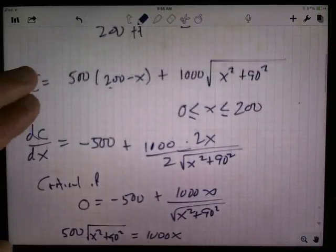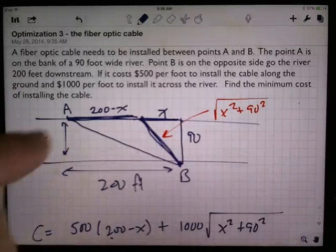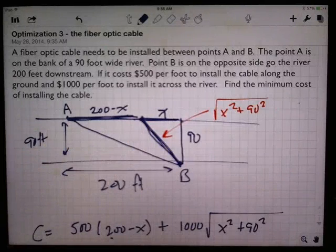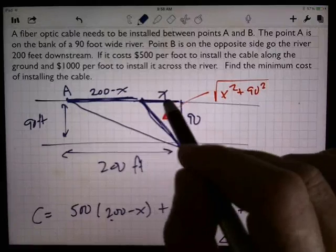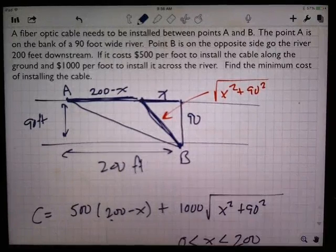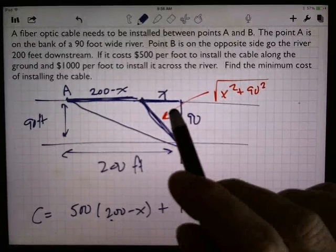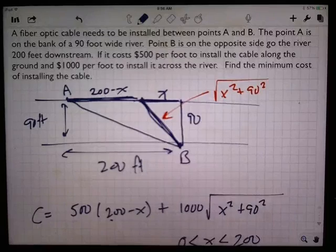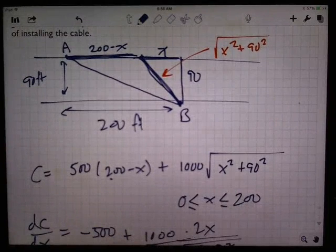What did we do? We established our objective function, minimized the cost, so I have cost equals. I established a variable which would show me the range of possibilities in the problem. So I used that as a variable to be able to describe the different paths that we might take with our fiber optic cable. For each value of x, I figured out what the cost is, so I have my cost as a function of the variable. Now I need to optimize.